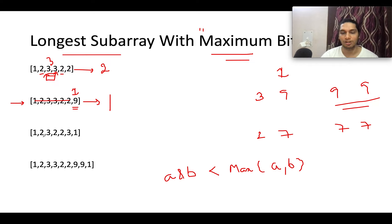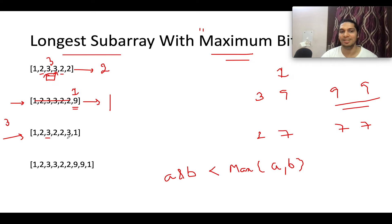In another case, the maximum element is 3, and it occurs at two separate instances in the array. Since the length of consecutive 3s is one in both instances, the answer is one.